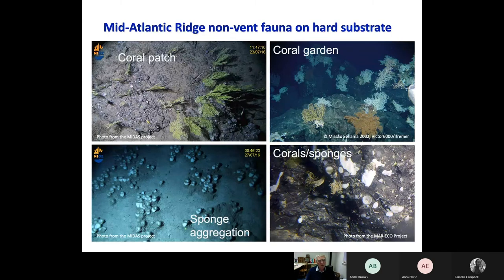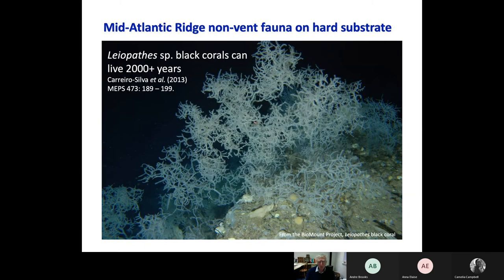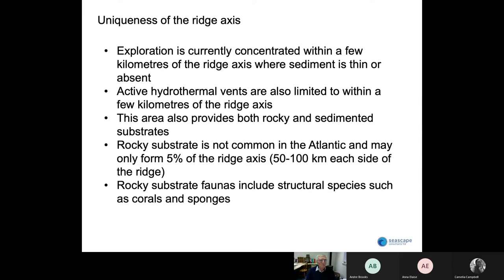In addition to the vent organisms, there are a number of organisms that would be regarded as VMEs and other organizations such as the FAO vulnerable marine ecosystems. These include corals, sponges, and aggregations of corals and sponges, which you can see here. We don't know where these occur very much at the moment, but we expect to find quite a few along the ridge axis. Some of these corals can live really long periods — such as 2,000 years for the black coral — which has very slow growth and slow reproduction. So the ridge is pretty unique: exploration is currently concentrated within a few kilometers of the ridge axis where the sediments are thin or absent. Rocky substrates aren't common in the Atlantic and may only form five percent of the ridge axis; and rocky substrate fauna include structural species such as corals and sponges that are regarded as VMEs.